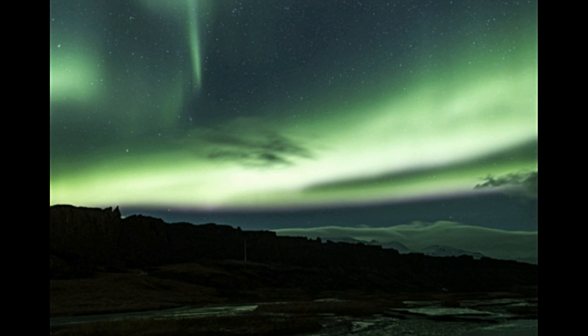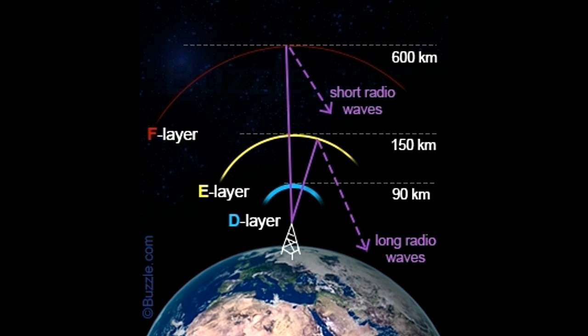The International Space Station has an orbit between 320 and 380 kilometers in this layer. Due to changes in the density of air in this layer, satellites experience a drag force. The outer boundary of the thermosphere is known as the thermopause, at a height of 500 to 1,000 kilometers or higher.